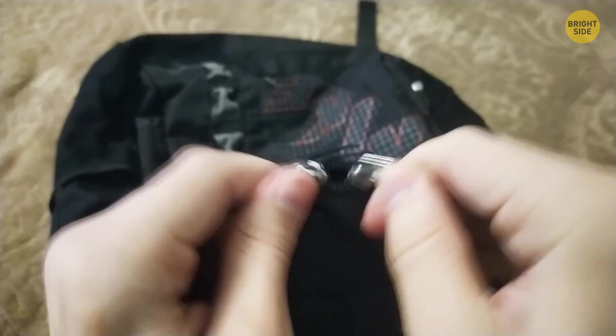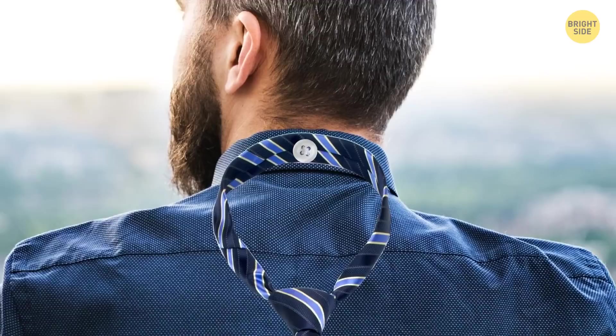That tiny little button on the back of a shirt collar is used to hold your tie in place. You don't want your tie trying to escape back there.